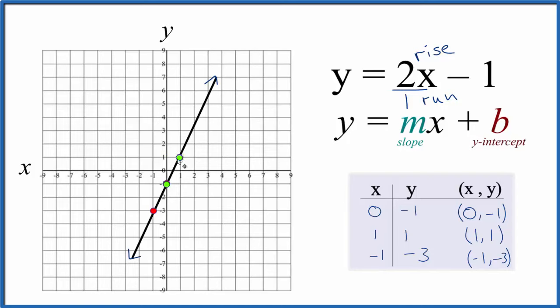Rise 1, 2 over 1. 1, 2 over 1. So you can see all of these points fall on our line y equals 2x minus 1.